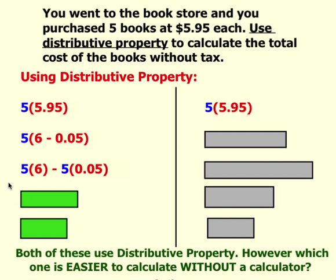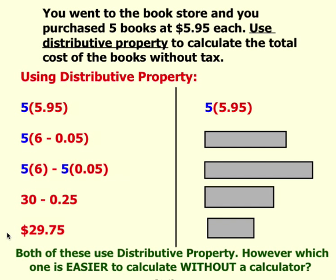Hopefully you can keep these calculations in your head. 5 times 6 is 30, and 5 nickels is 25 cents. Hopefully you can still do this calculation in your head: $30 minus a quarter. Your total result is $29.75.